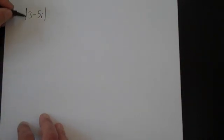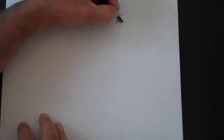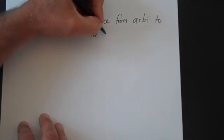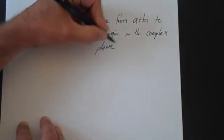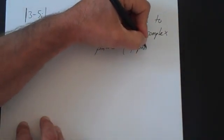So we're going to use that definition to find the absolute value of a complex number. The definition is that the absolute value is simply the distance from a plus bi to the origin in the complex plane. If you need to review the complex plane, you can watch the video on Graphing Complex Numbers.